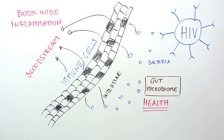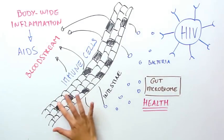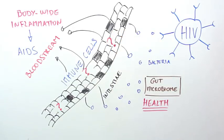Scientists think this may be a major cause of body-wide inflammation that is characteristic of HIV and that contributes to AIDS. But we're not really sure exactly how this barrier gets damaged in HIV.